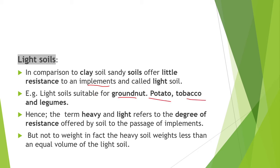Heavy soil — clay soil — imparts cohesion, stickiness and fine texture to soil, and induces resistance to passage of implements, making the soil heavy. This soil is suitable for cotton, rice and sorghum. Light soil — sandy soil — has less resistance to implements compared to clay soil, so mechanization is easy. Light soil is suitable for groundnut, potato, tobacco and legumes.